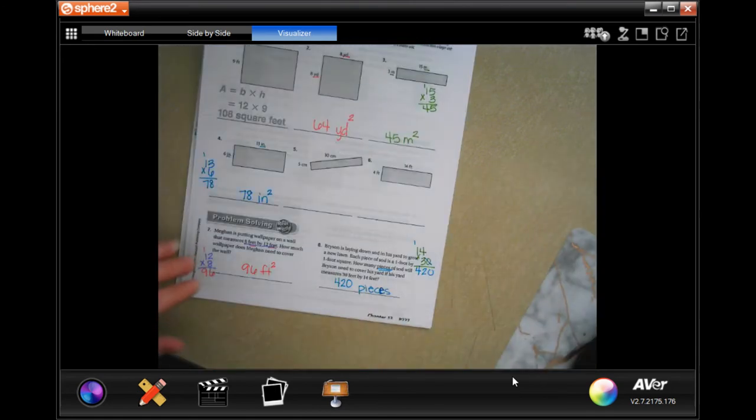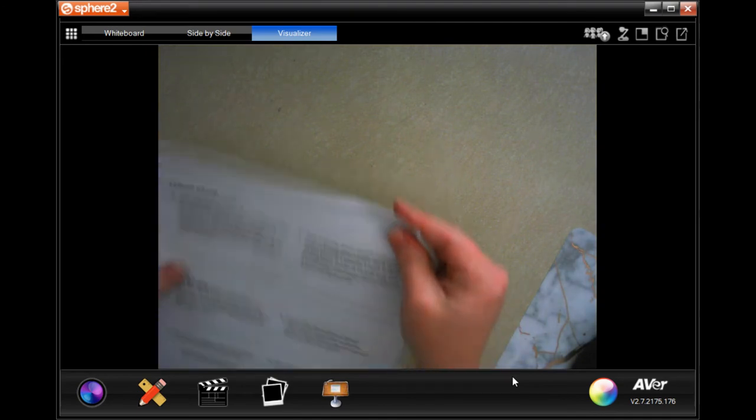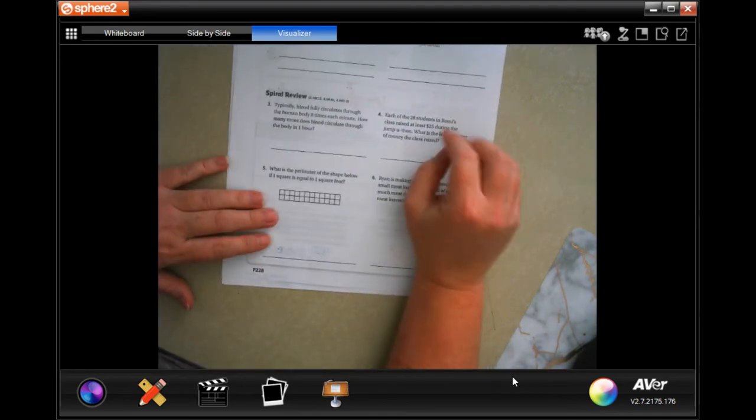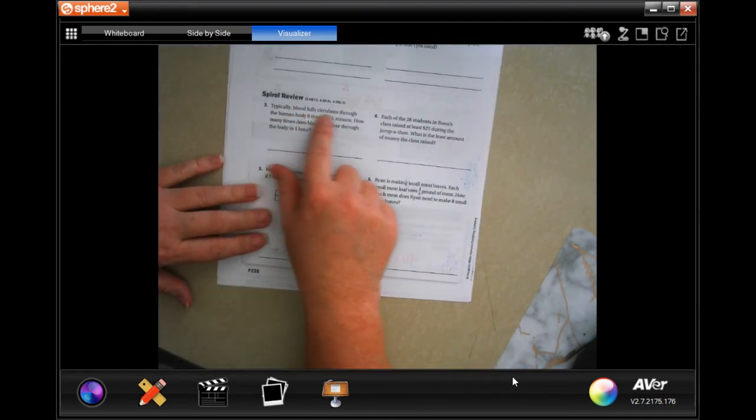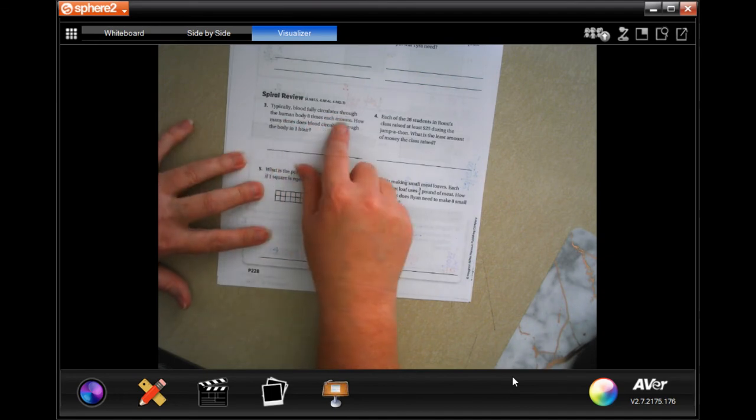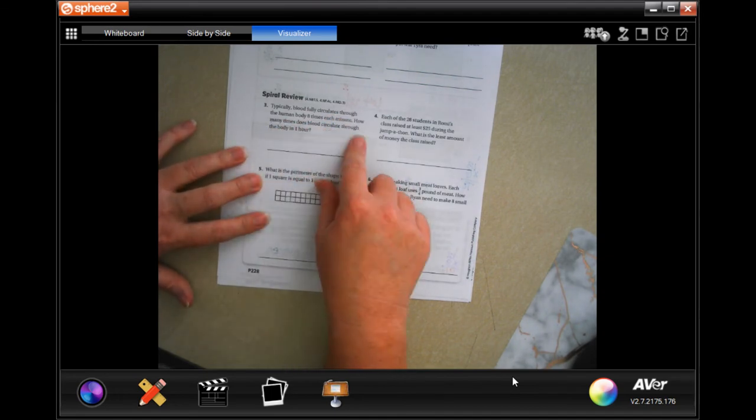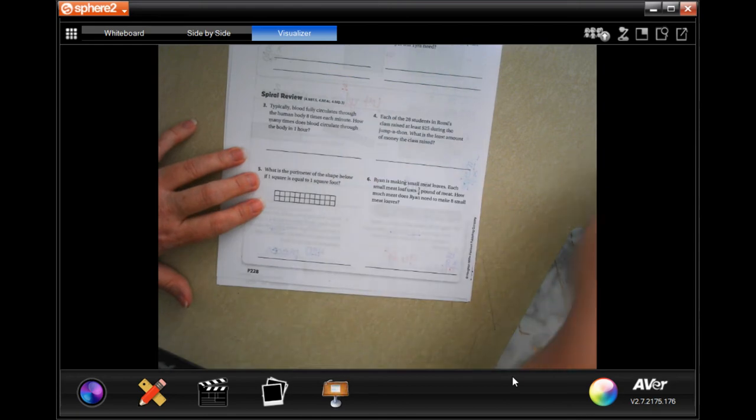Okay. All right, y'all. We're going to go on to the back, where you guys are going to do the lesson check, just like always, and we're going to go down and do the spiral review. It says, typically, blood fully circulates through a human body eight times each minute. How many times does the body circulate through the body in an hour?